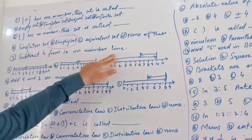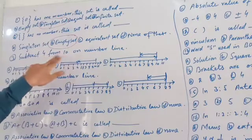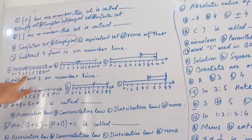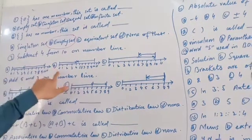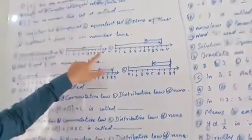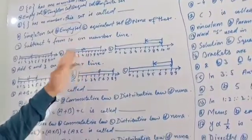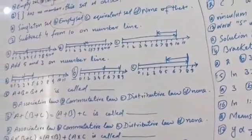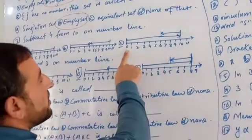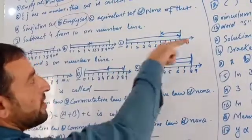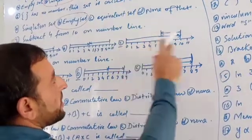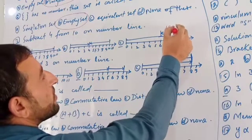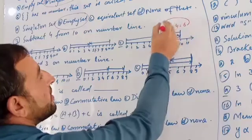Subtract 4 from 10 on the number line. The number line shows 4 minus. Number 4 at step 10. Number 4 minus — showing ten minus four, the answer is six.